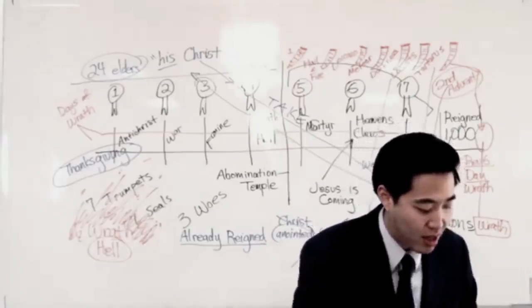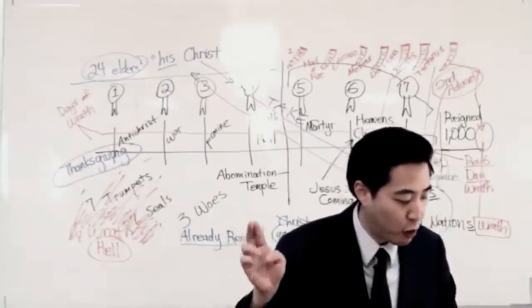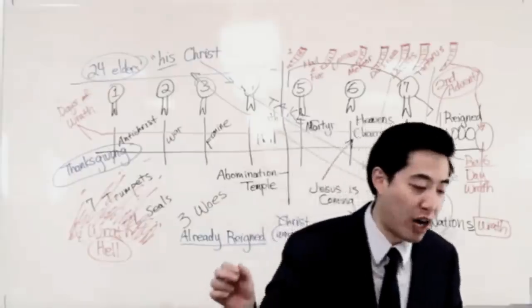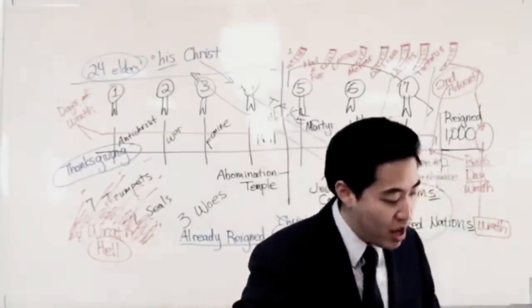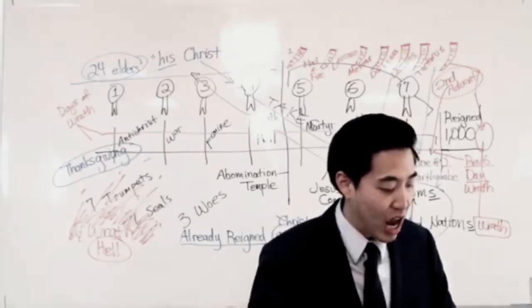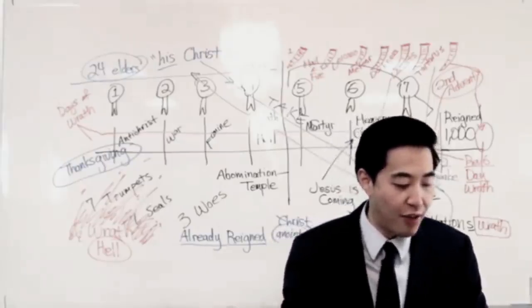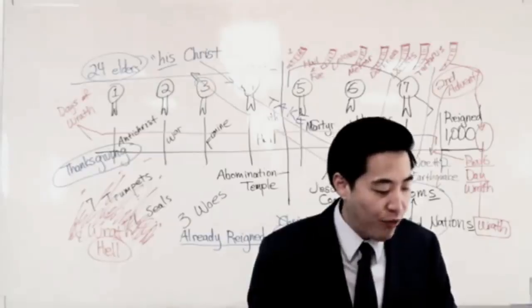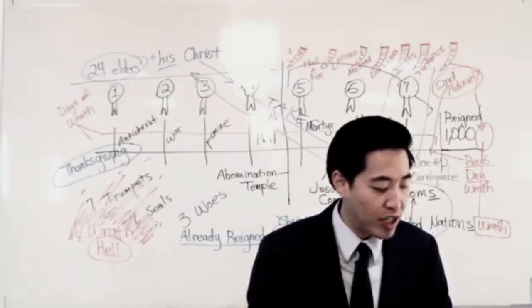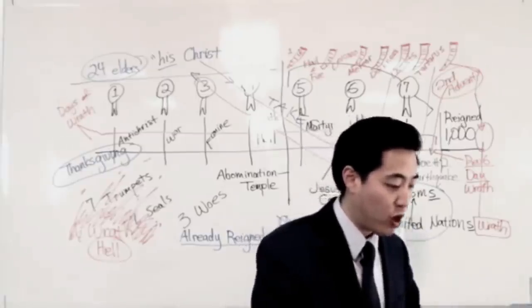Yes, after his wrath at Revelation 20 verse 9 and 10, what happens? Verse 11: I saw a great white throne and him that sat on it, from whose face the earth and heaven fled away. I saw the dead, small and great, stand before God. See that? There's your answer.